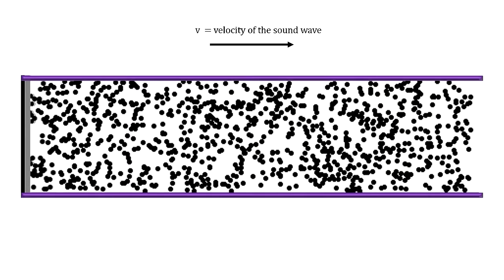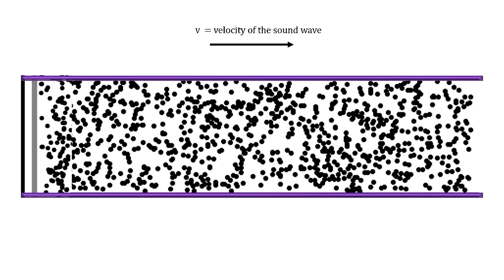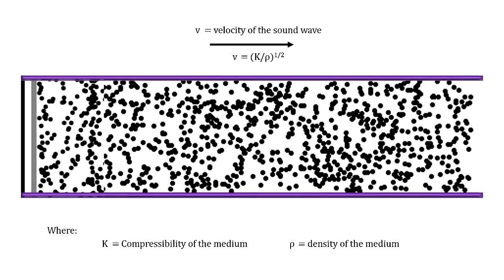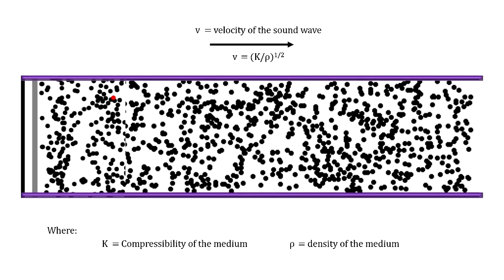How fast the wave moves depends on the characteristics of the medium. In particular, the higher the resistance to compression, its compressibility, the faster the movement.